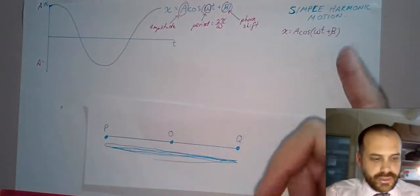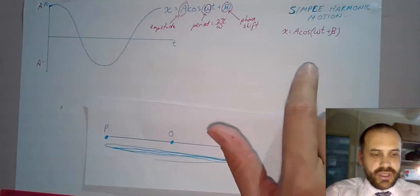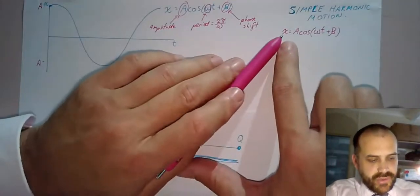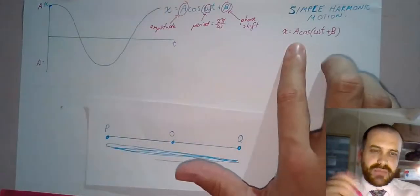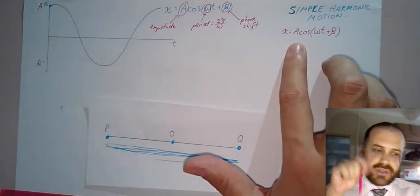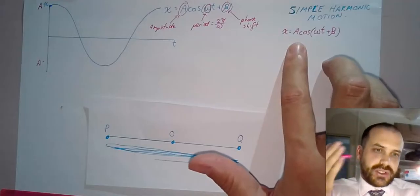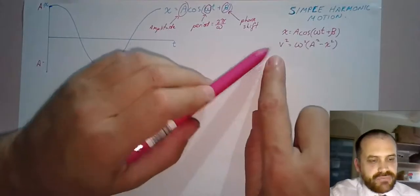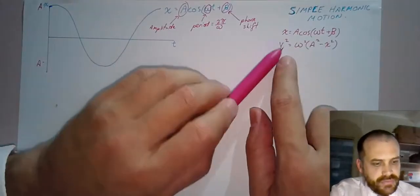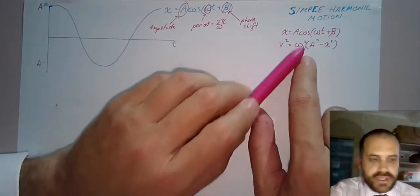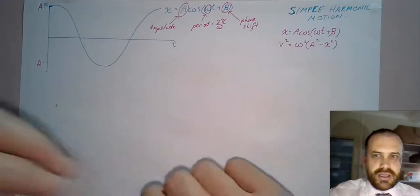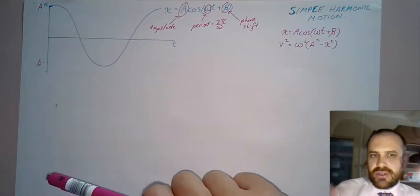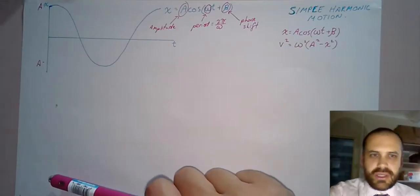The first important formula for simple harmonic motion: we're going to look at a velocity function. You know how to find the derivative of that, but I'm going to give you a velocity function in terms of displacement instead. Velocity squared equals ω²(a² - x²). I'm not going to derive that. We've got bigger fish to fry here.